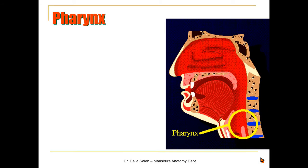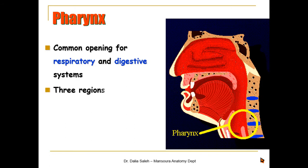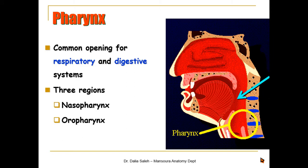The second part of the upper respiratory tract is the pharynx. The pharynx acts as a common passage for both the respiratory and digestive systems. It has three regions: the nasopharynx, which lies behind the nasal cavity; the oropharynx, which lies behind the oral cavity; and the laryngopharynx, which lies behind the larynx.